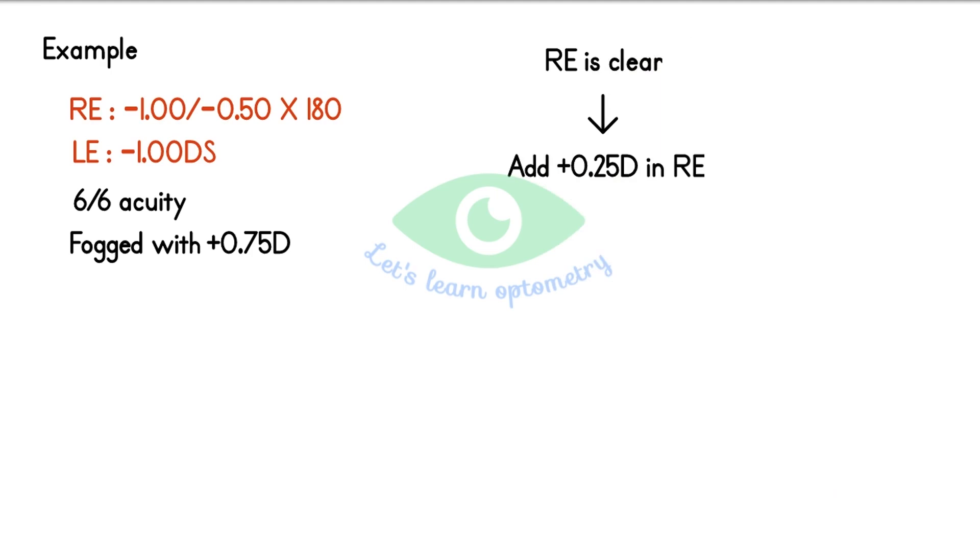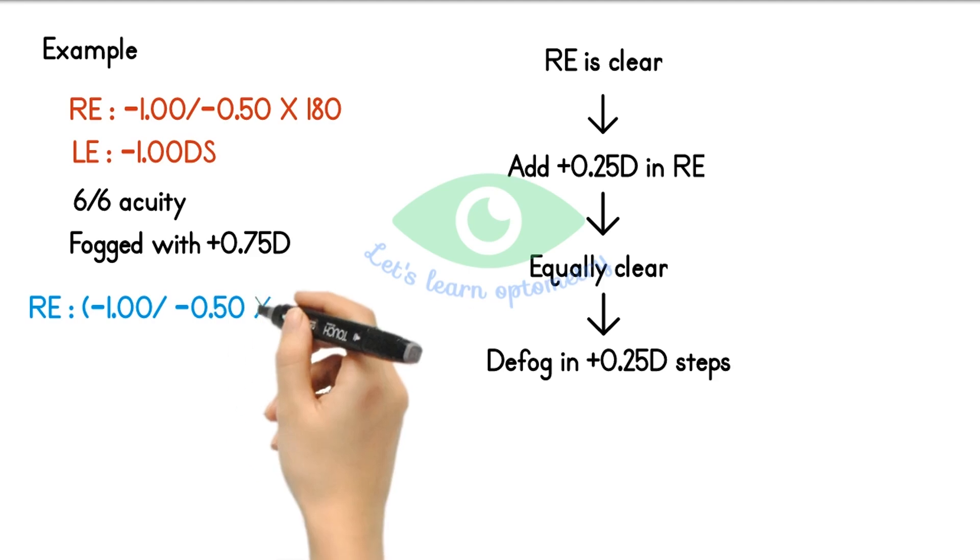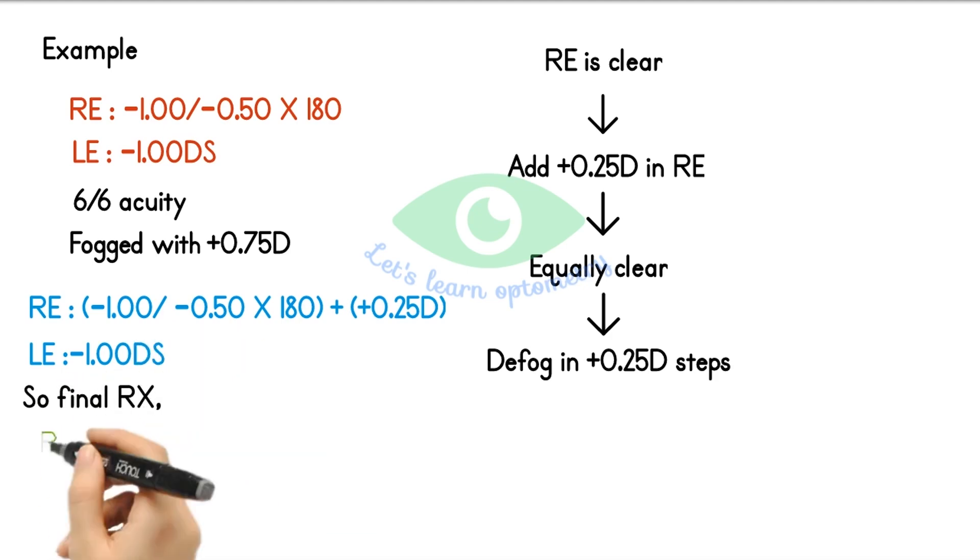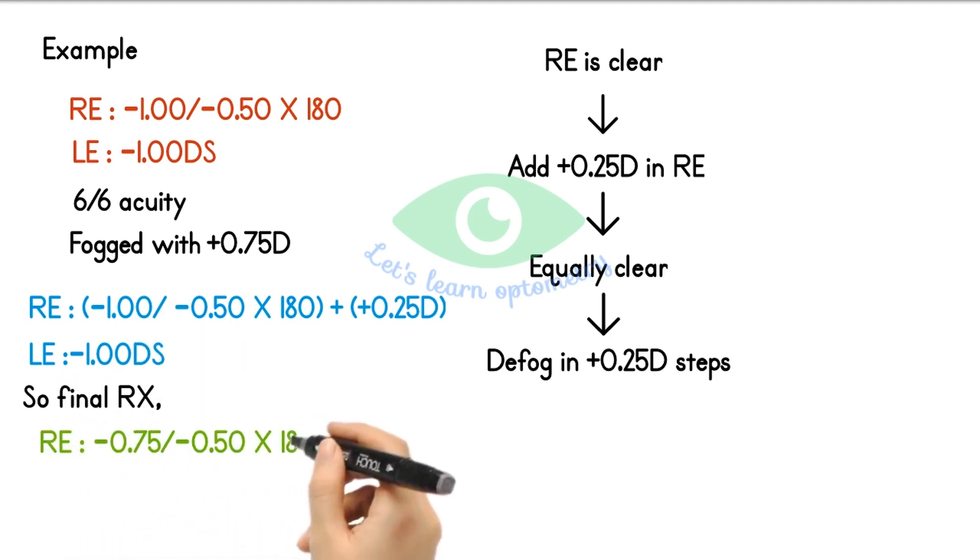Now, after alternate occlusion, they said both eyes are equally clear. So we balanced the accommodation, slowly defog in 0.25 steps and write the final Rx. In the trial frame, we have minus 1 with minus 0.5 at 180 from the monocular refraction value and plus 0.25 diopter from fogging. In the left eye, we have minus 1 diopter. So the final prescription will be right eye minus 0.75 with minus 0.5 at 180 and left eye is minus 1 spherical.